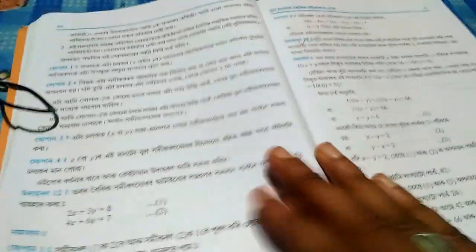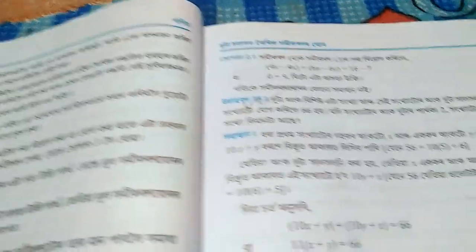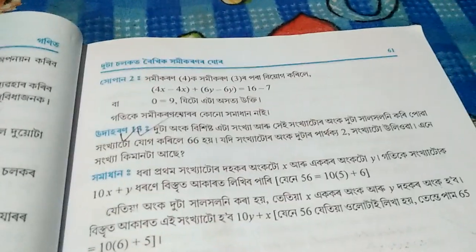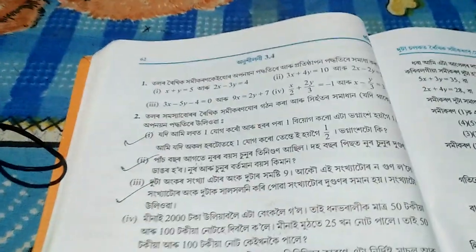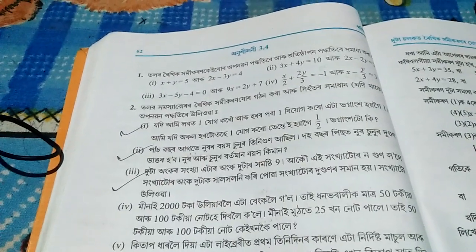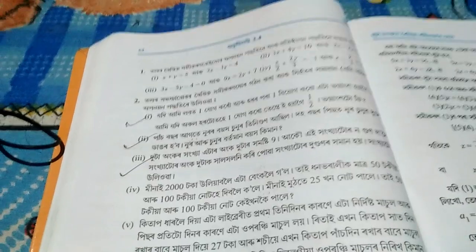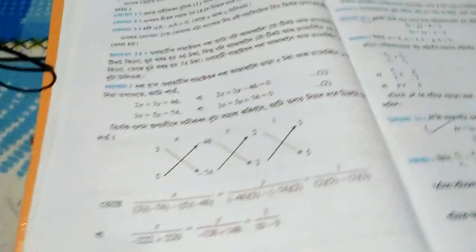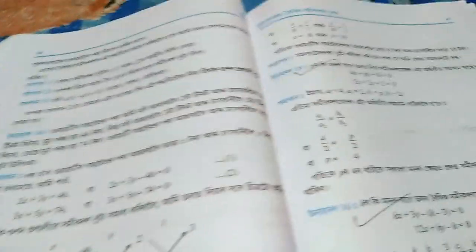Moving forward, for topic 3.4, question number 2 is important. Looking at the question numbers, you'll find that multiple questions are significant here. I've marked the important ones for you.